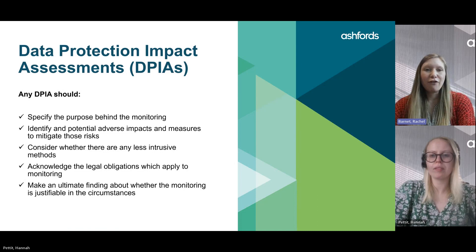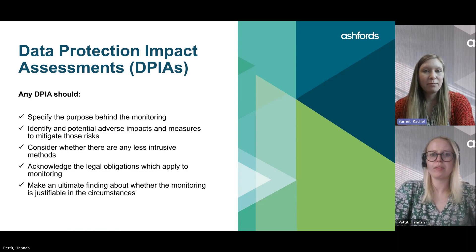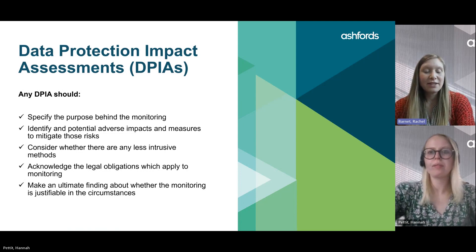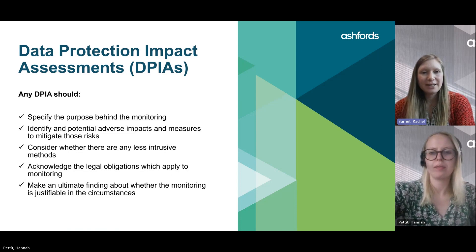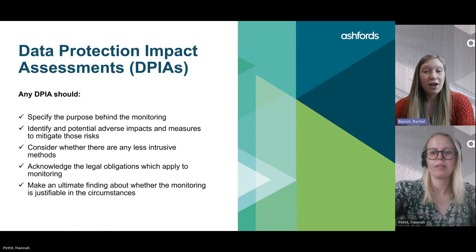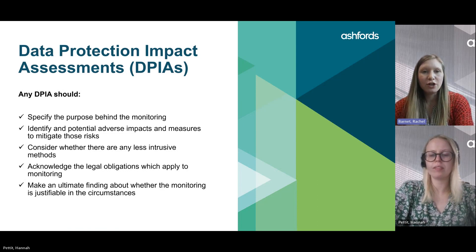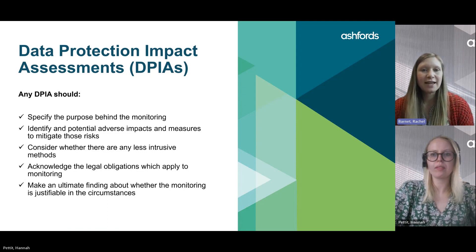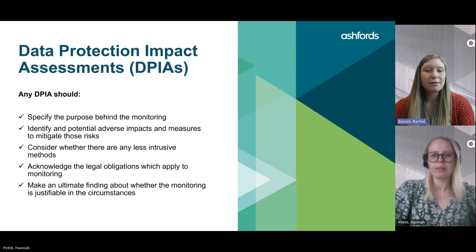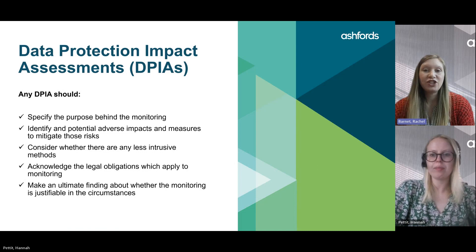The DPIA should specify the purpose behind the monitoring, identify any potential adverse impacts and the measures to mitigate those risks, and consider whether there are any alternative less intrusive methods to the type of monitoring proposed. It should acknowledge the legal obligations which apply, such as identifying the lawful basis and the special category condition if necessary for processing the data. Ultimately, the DPIA should make a finding about whether the monitoring is justifiable in the circumstances.